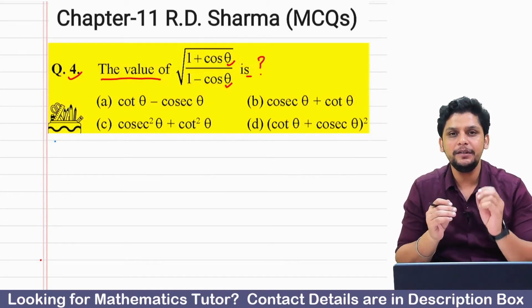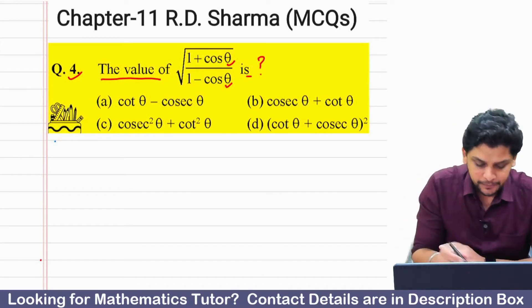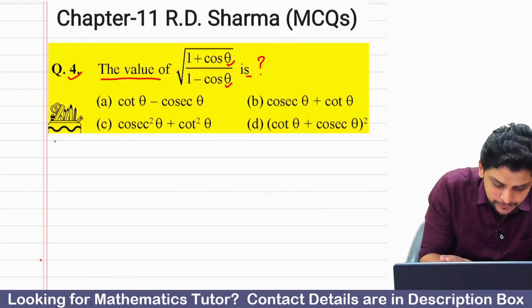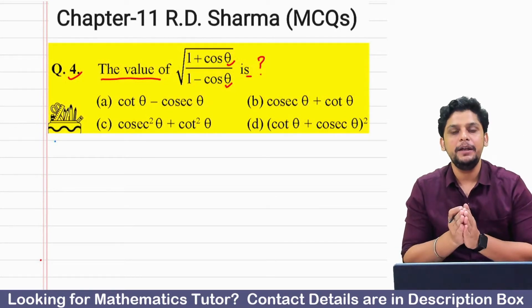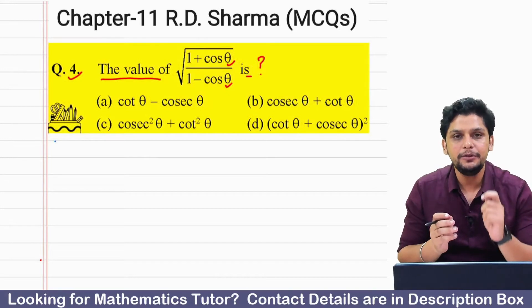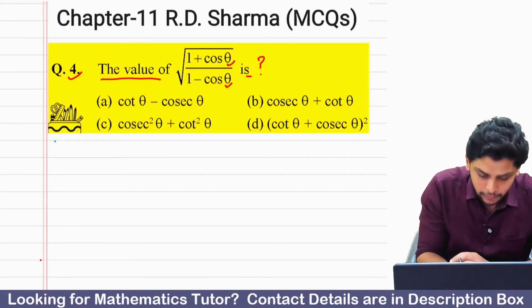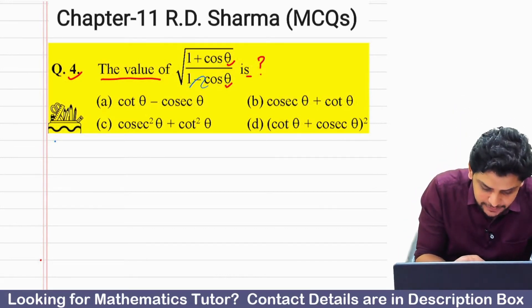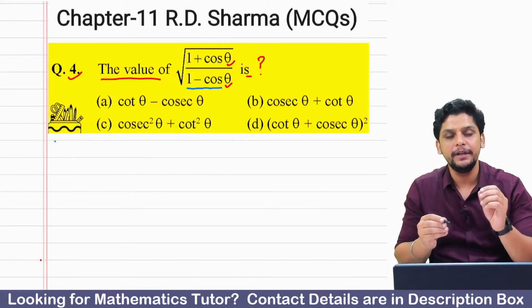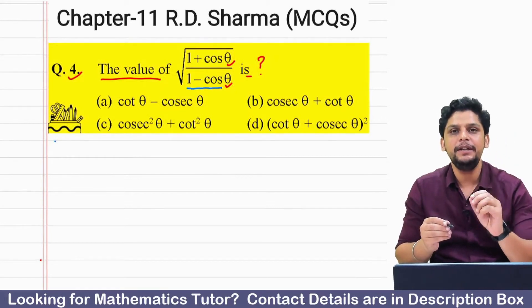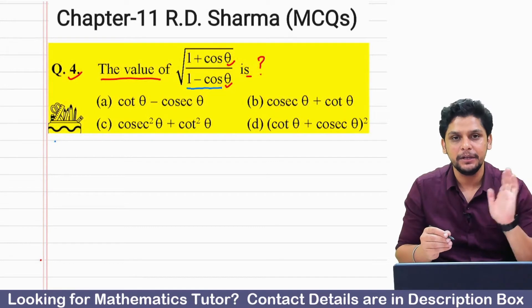Let's solve this question. What we have to do is — we have a denominator of (1 minus cos theta), so we have to find the conjugate. I have discussed the conjugate method in question number 3.